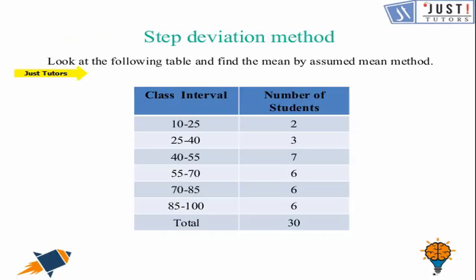So the question says look at the following table and find the mean by assumed mean method. The table says 10 to 25, 25 to 40, and so on.